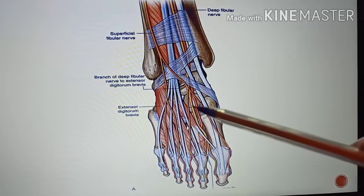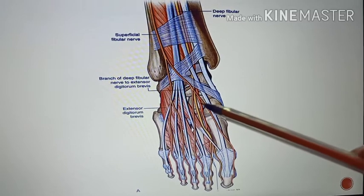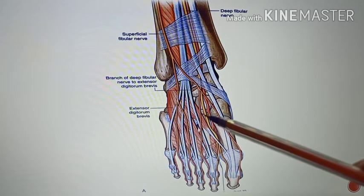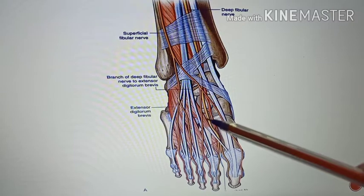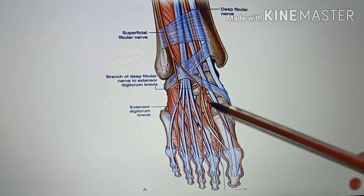Also laterally you have the medial terminal branch of the deep peroneal nerve. Coming to the branches of the dorsalis pedis artery: first, the lateral tarsal artery; second, the medial tarsal artery; third, the arcuate artery; and fourth, the first dorsal metatarsal artery.